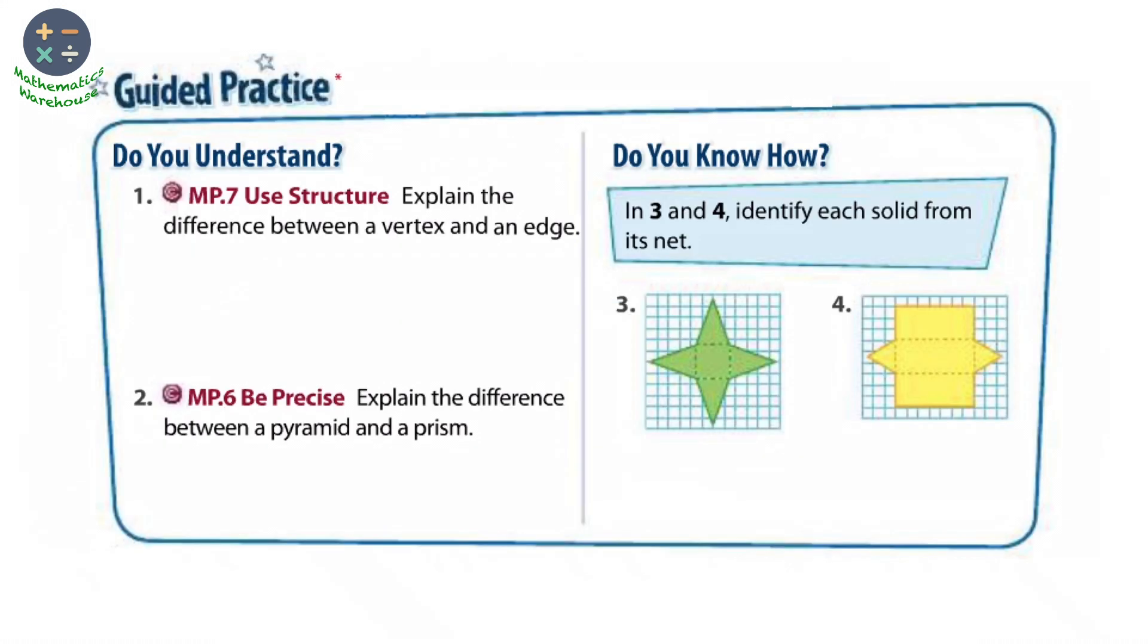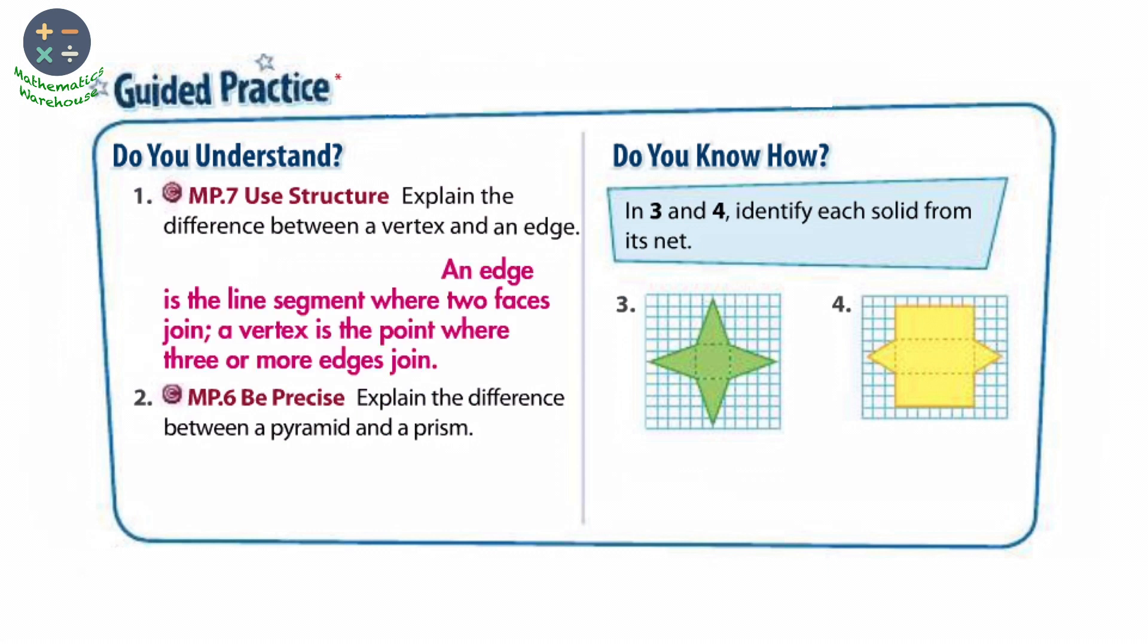Question number one, explain the difference between a vertex and an edge. As we defined before, a vertex is the point in which two edges intersect, but an edge is the line segment in which two faces intersect. So an edge is a line segment where two faces join or intersect, but a vertex is the point where three or more edges join. Number two, explain the difference between a pyramid and a prism. As we said, prisms have two parallel bases but pyramids have one base.